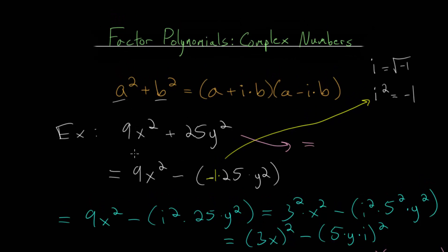And we just need to recognize that a in this case is 3x, since we are squaring 3x to get 9x squared. And b is 5y, since 5y times 5y is 25y squared.